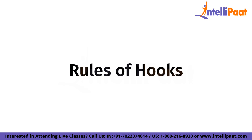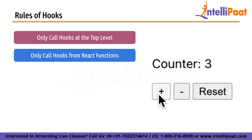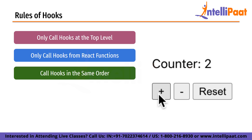The rules of hooks are a set of guidelines you should follow when using React hooks to ensure that your components work correctly. First, only call hooks at the top level — you should only call hooks at the top level of your functional component, not inside loops or conditions, because hooks must be called in the same order on every render. Second, only call hooks from React functions such as functional components or custom hooks, not from regular JavaScript functions. Third, always call hooks in the same order on every render, because hooks rely on the order in which they are called to maintain state between renders.